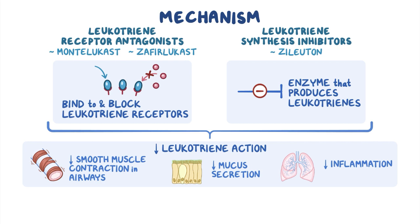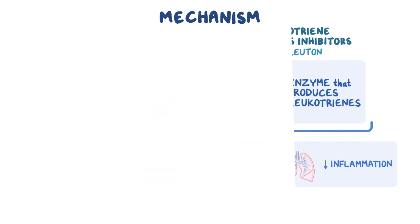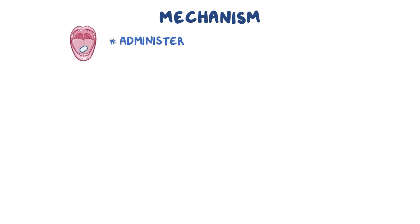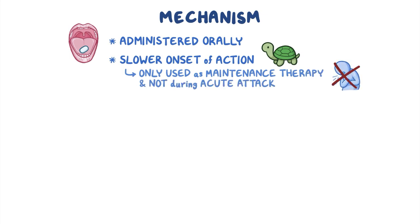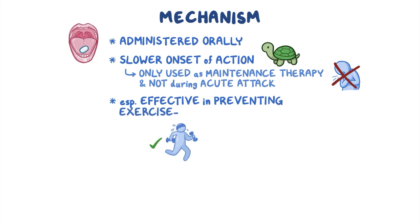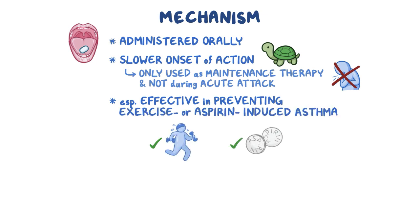Unlike other medications that are used for asthma, leukotriene modifiers are typically administered orally and have a slower onset of action, which is why they are only used as part of maintenance therapy and not during an acute attack. In addition, they are especially effective in preventing exercise- or aspirin-induced asthma.